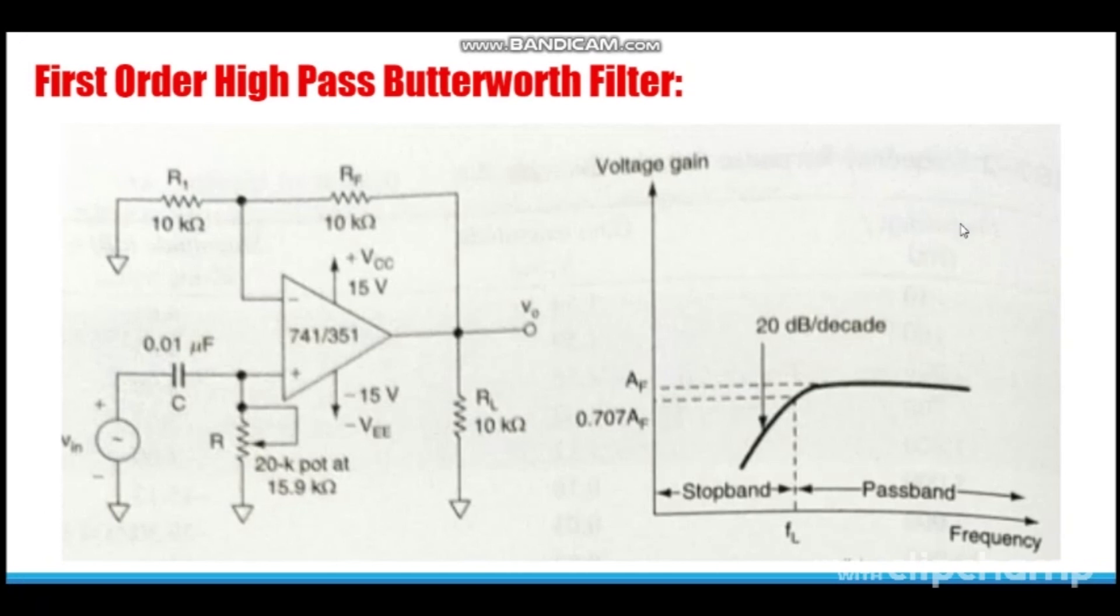So we have first order high pass Butterworth filter. High pass filters are often formed simply by interchanging the frequency determining resistors and capacitors. See, the circuit is exactly similar to low pass filter. Only the change - in low pass filter we had resistor over here and capacitor over here. Here we are just interchanging them. Look at the frequency response. This filter has a stop band from frequencies zero to low cutoff frequency FL. And once the frequency becomes greater than FL, all the frequencies are passed by this filter. So those frequencies come under pass band frequencies. And the roll-off rate, that is the rate at which the gain starts increasing in stop band, is called roll-off rate.